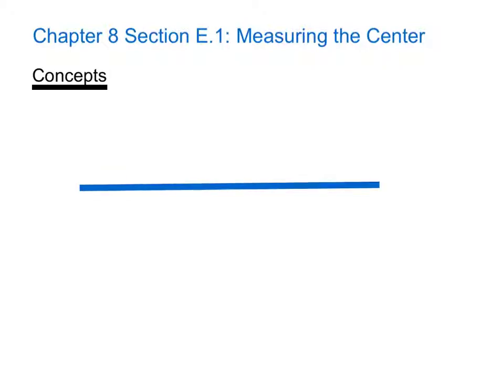Let's say we have a data set which we'll represent with this line here. The end of the line represents the minimum, and this end represents the maximum. This is called the spread of the data.